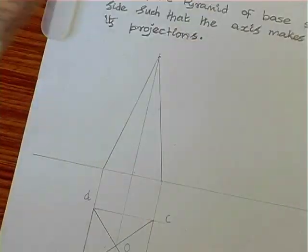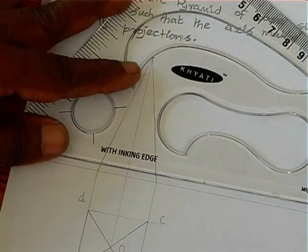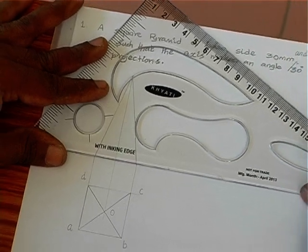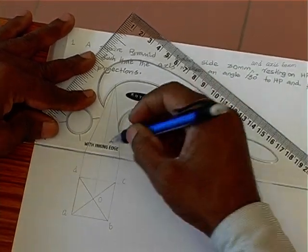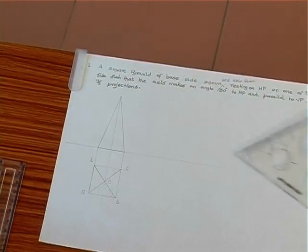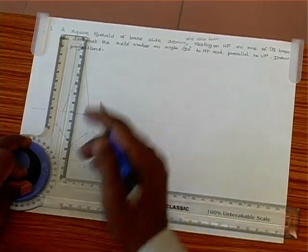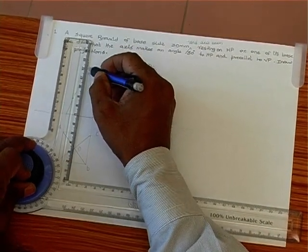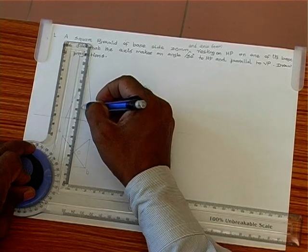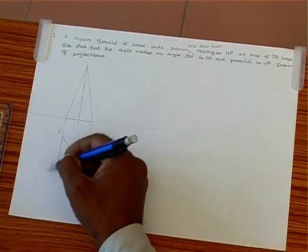So this is to define the shape. Now you can just introduce the axis also. So introduce the axis line and you can name it.